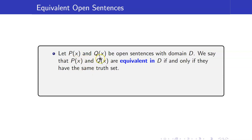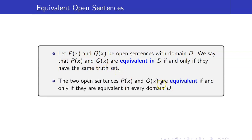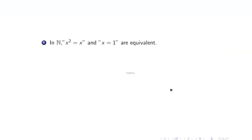Suppose that P(x) and Q(x) are open sentences with domain D. We say that P(x) and Q(x) are equivalent in D if and only if they have the same truth set. If they are equivalent for every possible domain D, we say that they are equivalent. Notice the difference: 'equivalent in D' versus equivalent in every possible domain.